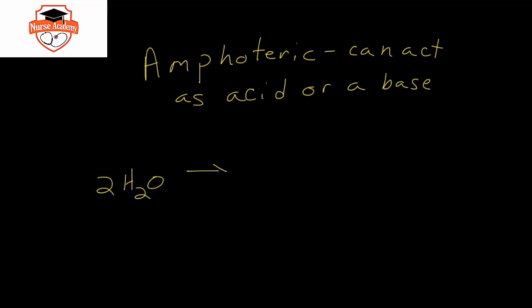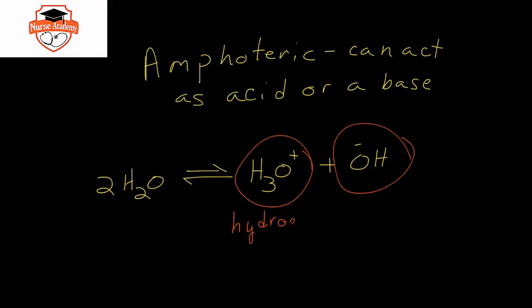One more thing we need to discuss is the term amphoteric. Things that are amphoteric can act as either an acid or a base. Water is always in a constant equilibrium where it's producing both hydronium ion and hydroxide ion. Because of this, water is the epitome of an amphoteric compound because it produces both a hydrogen ion donor and a hydrogen ion acceptor.